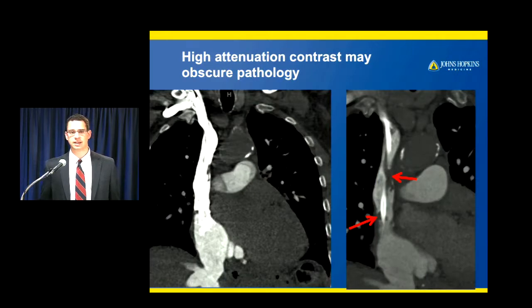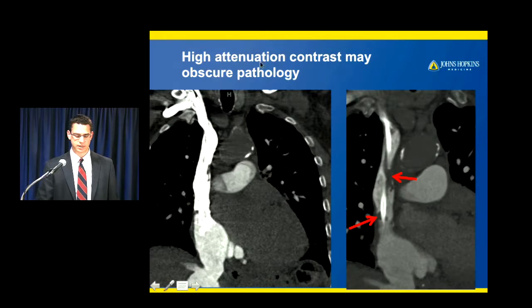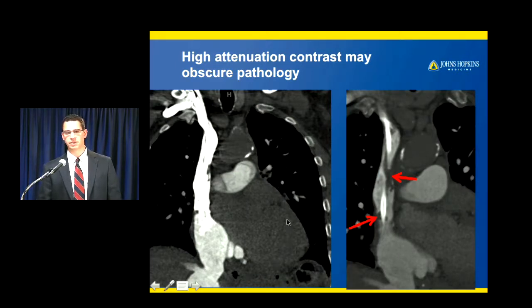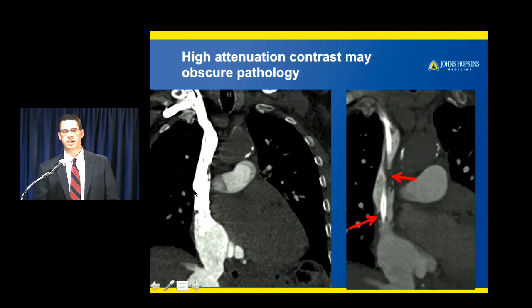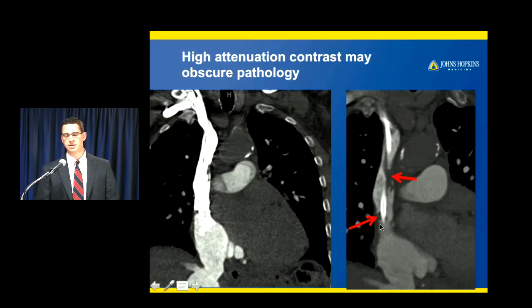Streak artifact can be problematic in the setting of the superior vena cava in people with catheters — high attenuation contrast can actually obscure pathology. In this case, the patient has very high attenuation contrast in the SVC and right atrium, with poor cardiac function and no filling of the left side of the heart. If you don't window correctly, you can't see through the contrast and may miss findings. This patient had quite a lot of clot adherent to the catheter, which we would have missed without widening to a bone window.